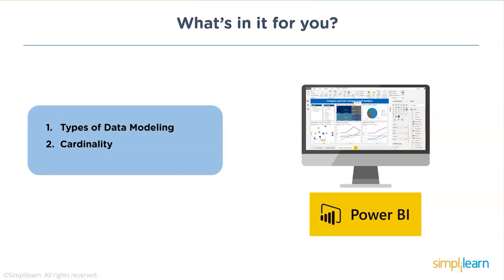The topics we are going to cover today include different types of data modeling. The most important aspect of data modeling is cardinality, which you basically decide after reviewing the nature of data and after you've imported it — what kind of cardinality you have to highlight.